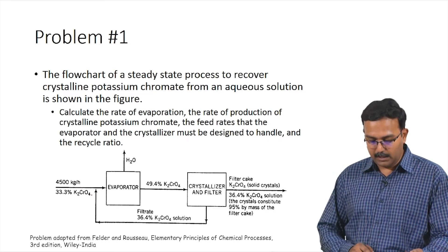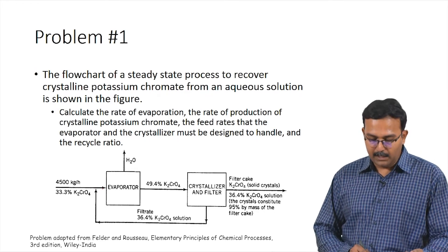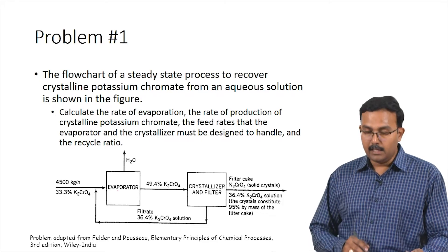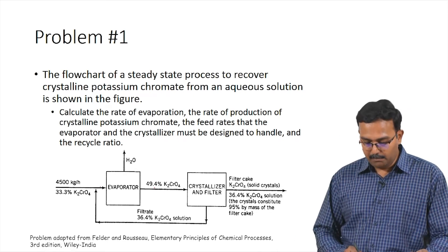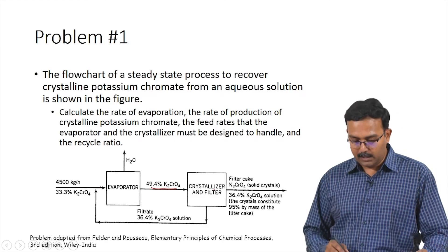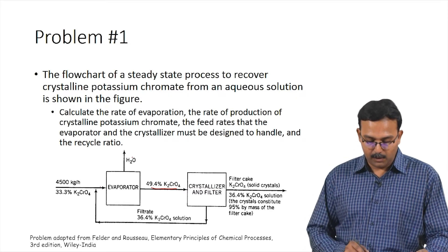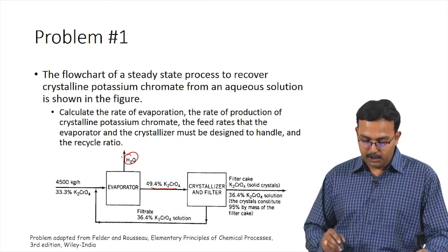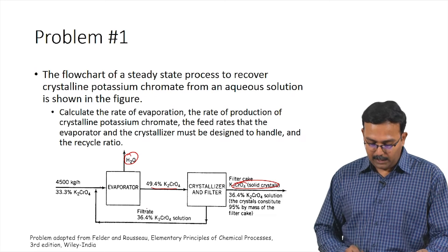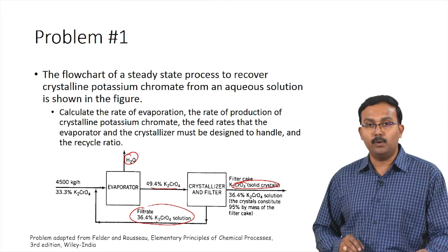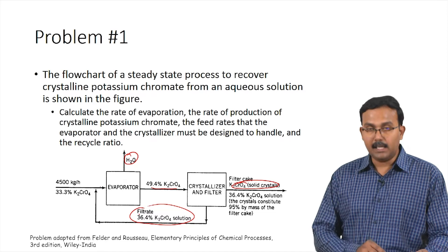The fresh feed gets mixed with the recycle stream, which is the filtrate, forming a gross feed or total feed — this is the feed rate the evaporator must be designed to handle. We also need to calculate the feed rate to the crystallizer and filter. Additionally, we need the rate of evaporation, the rate of production of crystalline potassium chromate, and the recycle ratio, defined as recycle divided by fresh feed.